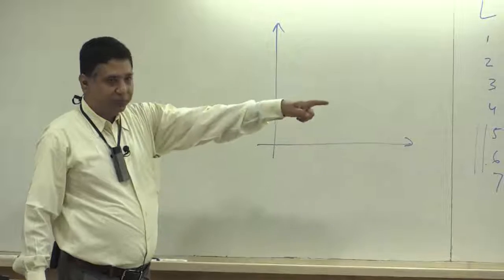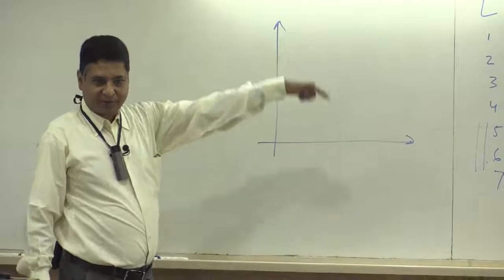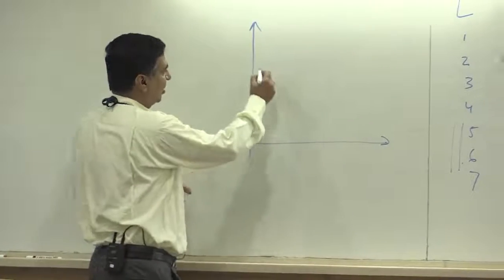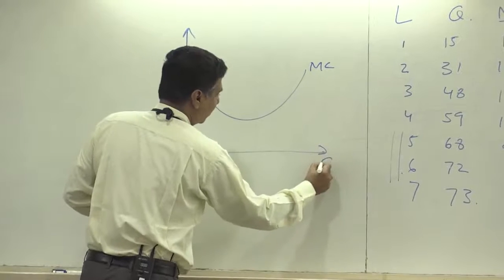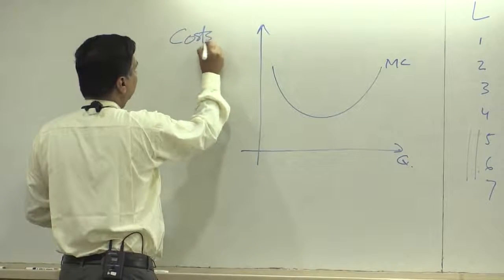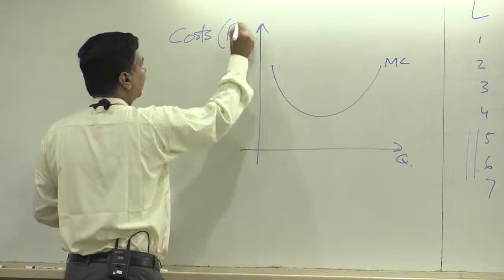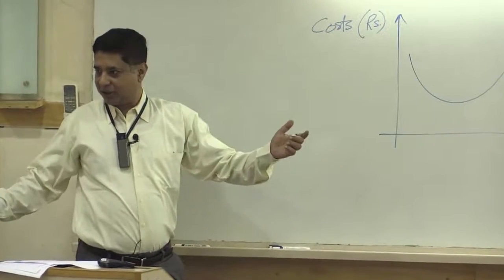When the price is equal to the marginal cost. What will I do? I will draw the marginal cost curve. So I will draw the marginal cost curve, looks like this. Here is quantity and here are costs, and costs are measured in rupees. This is marginal cost.